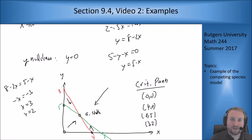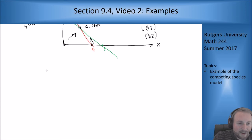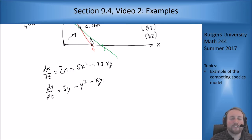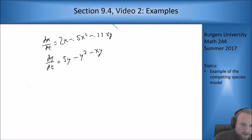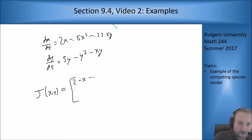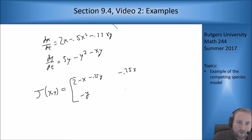Now let's check all of those points using our Jacobian process discussed in the last section. Our functions are dx/dt and dy/dt — I'll write them up here with all terms distributed out. The Jacobian matrix entries are: the x-derivative of the x-function gives (2 minus x minus 0.25y), the y-derivative of the x-function, and the x- and y-derivatives of the y-function.